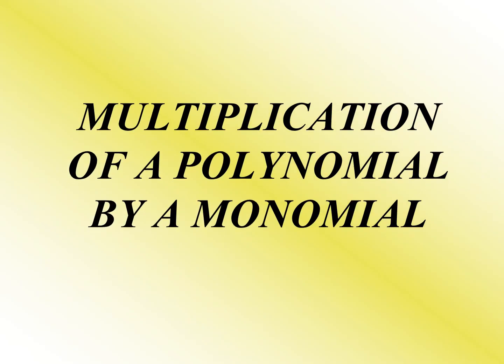Let's start with the multiplication of a polynomial by a monomial. When we say polynomial, it is an algebraic expression consisting of a term or a sum of terms, each of which is either a number or a product of a number and the positive integral power of an unknown quantity. Then when we say monomial, it is an algebraic expression with only one term.